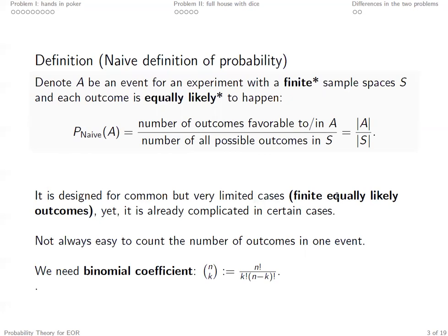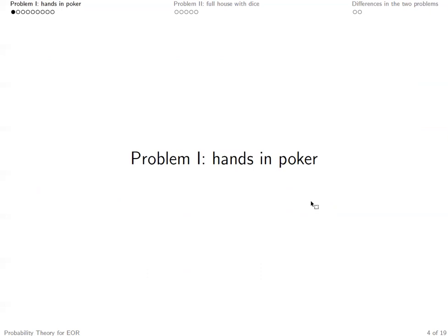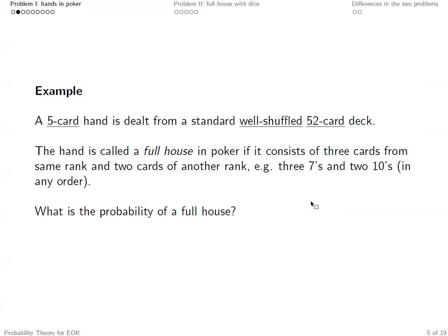We are going to need the help of binomial coefficients — n choose k. This symbol is read as n choose k, defined as n factorial divided by k factorial times n minus k factorial. We'll discuss this formula in later slides in detail. In this video, we're going to pick up some tricks of how to count by walking through two problems. Problem one involves poker — suppose we are picking five cards out of a standard, well-shuffled 52-card deck.